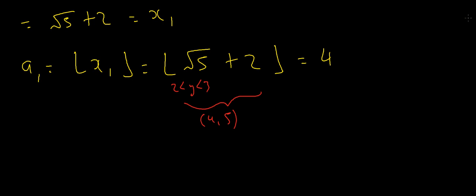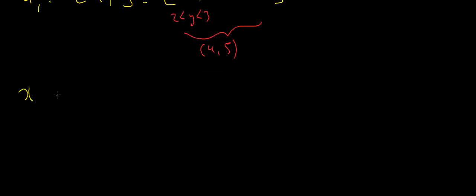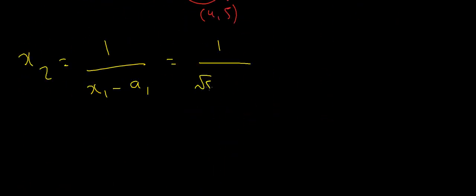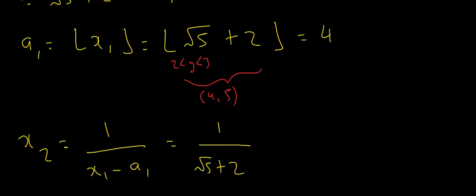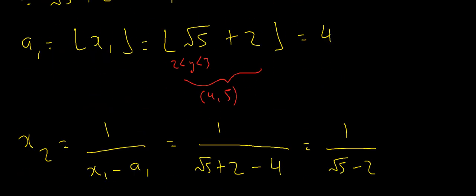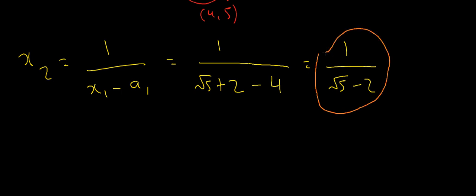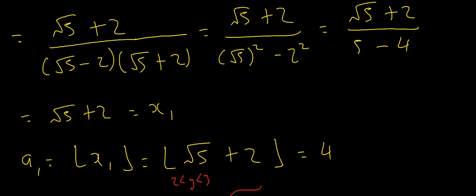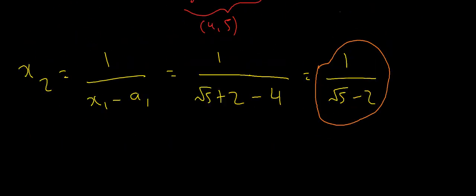So let's try and find x₂. x₂ is going to be 1 divided by x₁ minus a₁. x₁ is root 5 plus 2, and a₁ is 4, so that's 1 divided by root 5 plus 2 minus 4, which is 1 divided by root 5 minus 2. We might have spotted a pattern here — I've circled 1 over root 5 minus 2. Looking back at our calculation for x₁, I also had 1 over root 5 minus 2 there. So when we rationalize the denominator, we're going to end up with exactly the same answer: root 5 plus 2, which is our value for x₁. So x₂ is just equal to x₁.